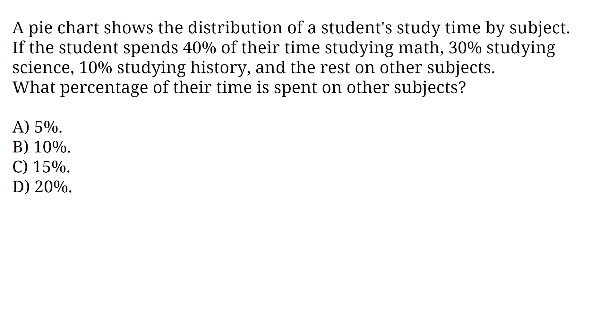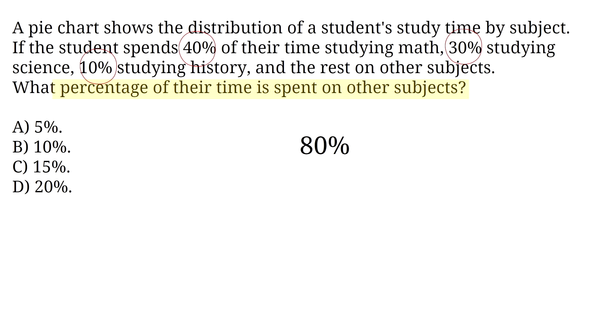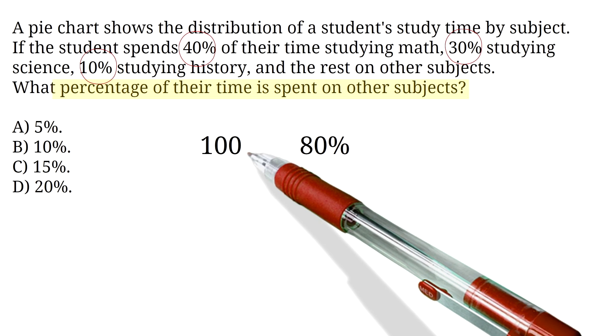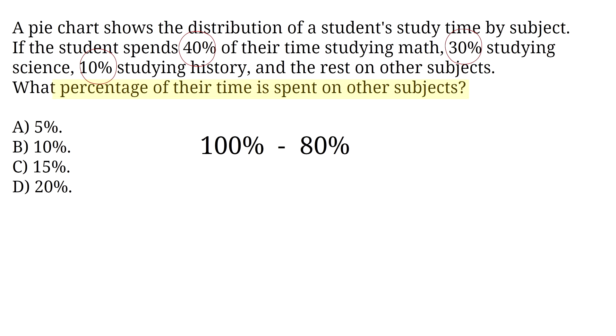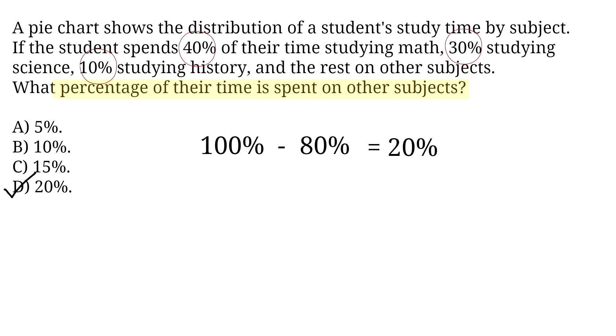To solve this question, we need to calculate the percentage of time spent on other subjects. First, we add up the percentages spent on math, science, and history, which is 40% plus 30% plus 10%, resulting in 80%. Now, to find the percentage spent on other subjects, we subtract 80% from 100% because the total percentage of study time is 100%. The total percentage in a pie chart is always 100%. This is 20%. So, the answer is D, 20%. The student spends 20% of their time on other subjects.